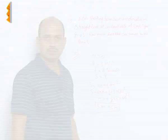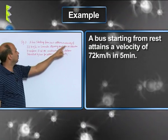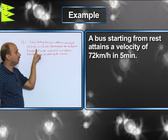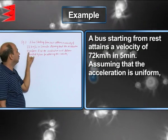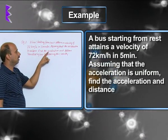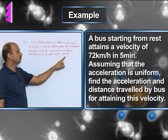Let us see another example, see this example. A bus starting from rest attains a velocity of 72 kilometers per hour in 5 minutes, assuming that the acceleration is uniform, find the acceleration and distance traveled by bus for attaining this velocity.